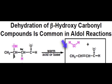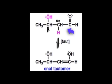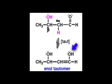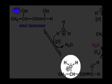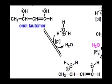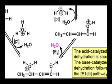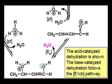Under acidic conditions, the pathway towards elimination is first through tautomerization to form this enol. A proton transfer step then occurs to transform a hydroxyl group into a water molecule, which is a good leaving group. Following this, beta elimination occurs to eliminate water from the molecule.